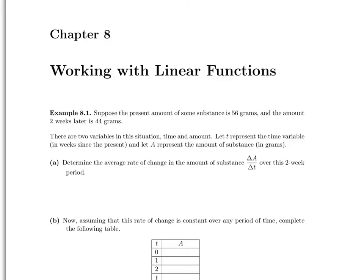Let's start by looking at example 8.1. Suppose the present amount of some substance is 56 grams, and the amount two weeks later is down to 44 grams. There are two variables in this situation, time and amount. We're going to let t represent the time variable, so it will represent weeks since the present, and we're going to let A represent the amount of substance in grams.